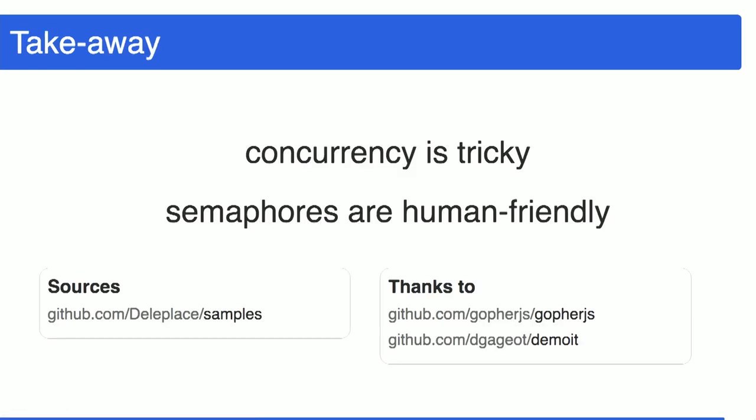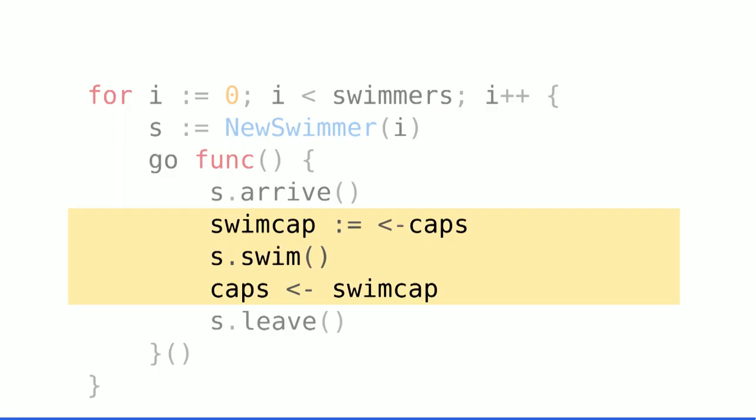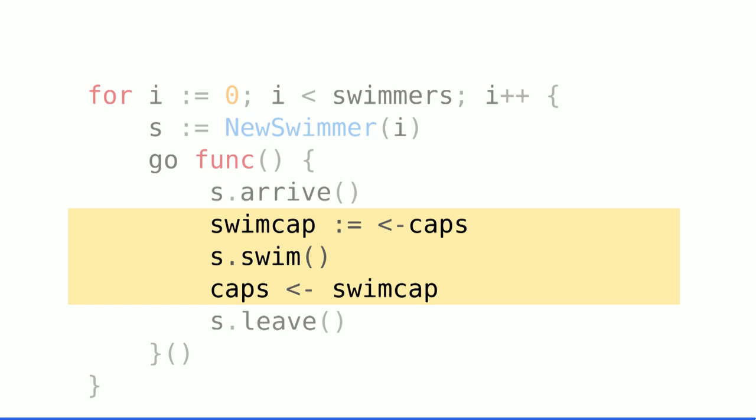My takeaway is that concurrency in general can be very tricky, but semaphores are human-friendly and easy to reason about. You can find the source of this presentation on GitHub, because this is the actual code of the simulation we've seen today, which I could present in a web browser thanks to the projects GopherJS and DemoIt. Thank you very much for listening.